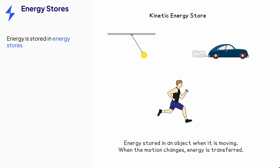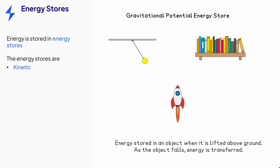Energy is stored in objects in different energy stores. Moving objects have energy in their kinetic store. When they stop moving, energy is transferred away from the object. When objects are raised through a gravitational field, energy is transferred to their gravitational potential store. When the object falls, energy is transferred away from the object.